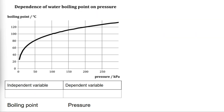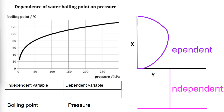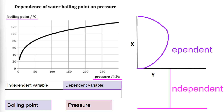Another way to find the independent and dependent variables when given a graph is by drawing the x- and y-axis of a graph. On the x-axis, you draw the letter D, as in dependent variable. And on the y-axis, you draw the letter I, as in independent variable. So on the graph, our x-axis is the boiling point, which is the dependent variable, and on the y-axis it is pressure, which is the independent variable.